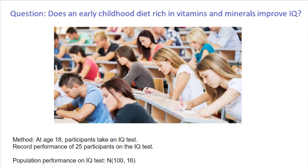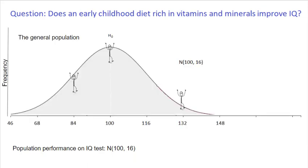Several of them are designed so that the mean is 100, the standard deviation is 16, and it's a nice normal distribution. Here is a graph showing what we might expect for an IQ test given to the general population. Someone right here is showing an IQ of 100, which is the mean. This person over here has an IQ of 132, which is two standard deviations above the mean. And this person with an 84 is one standard deviation below the mean.